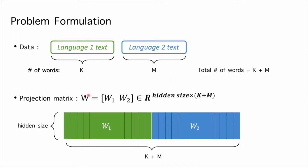Then the output projection matrix W is partitioned into W1 and W2, with each column indicating the latent representations of each word in language 1 and 2 respectively.